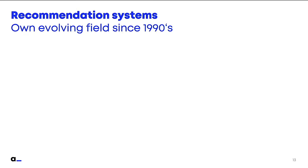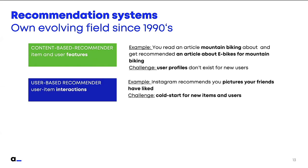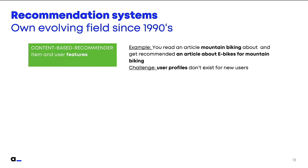Now I want to give an overview of the three main types of recommendation systems. Recommendation systems are an evolving field in research and industry since the early 1990s. One type is content-based recommendation — these systems extract features from the content itself, building profiles for both the content and the users based on those content features. For example, if you read an article about mountain biking and the app recommends an article about e-bikes for mountain biking, this could be a content-based recommendation, using the content itself as a seed to find new content.